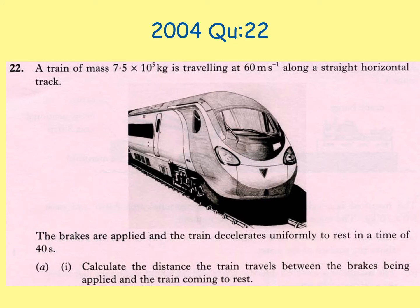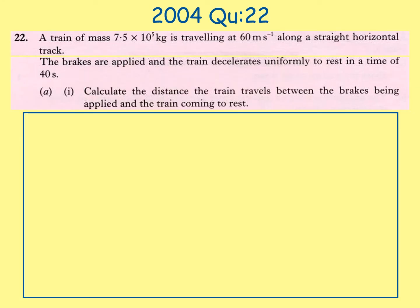2004 Question 22. A train of mass 7.5 × 10⁵ kg is travelling at 60 metres per second along a straight horizontal track. The brakes are applied and the train decelerates uniformly to rest in a time of 40 seconds. Calculate the distance the train travels between the brakes being applied and the train coming to rest. Known values: u = 60 m/s, v = 0 m/s (coming to rest), t = 40 s, find s.